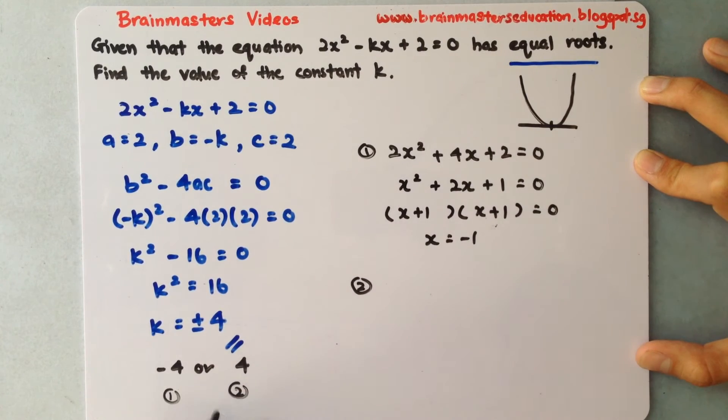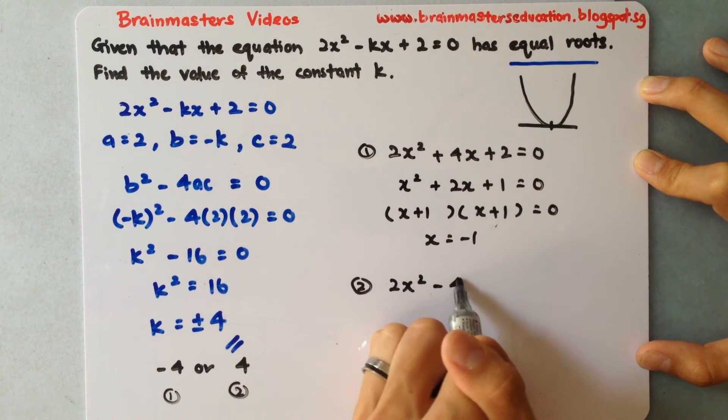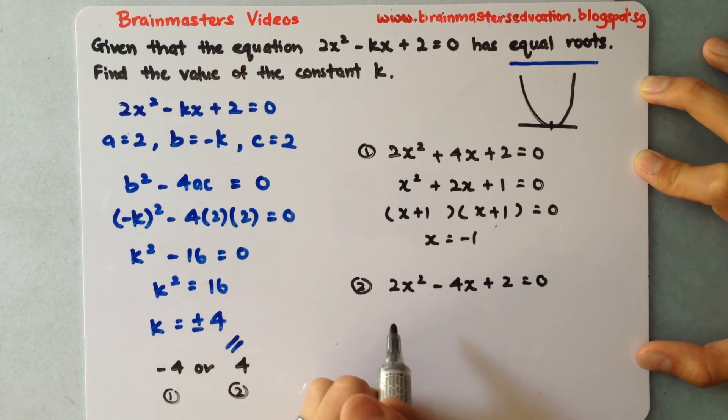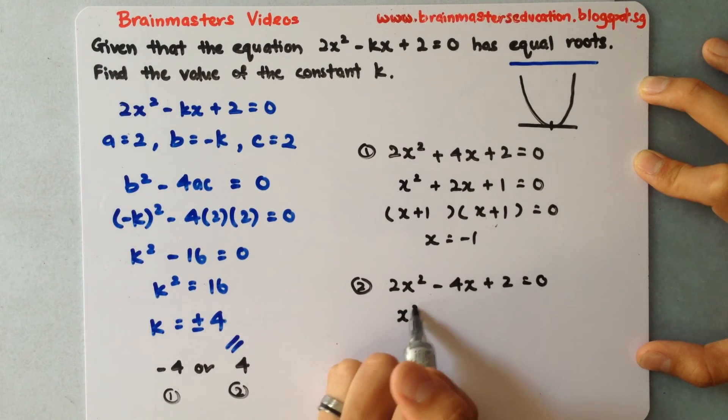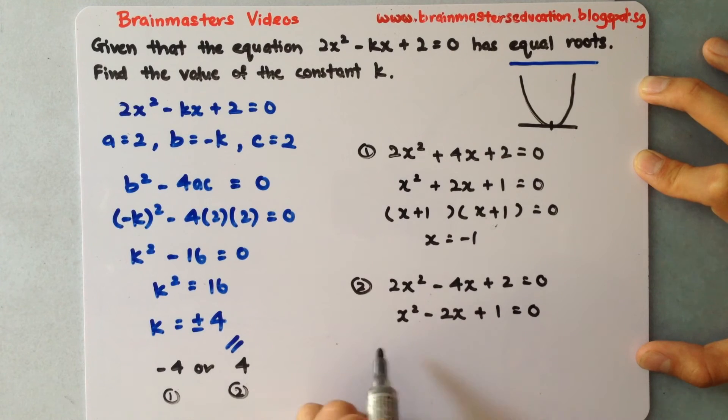For the next one, I'll put in 4. That means I'll have 2x squared minus 4x plus 2 equals 0. Divide throughout by 2: x squared minus 2x plus 1 equals 0. Same thing, I'll do my factorizing to give me the two brackets. Wow, so there's only one point which is common. Okay, which is x equals 1.